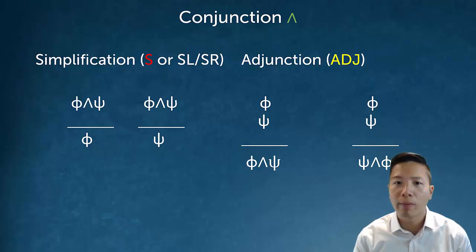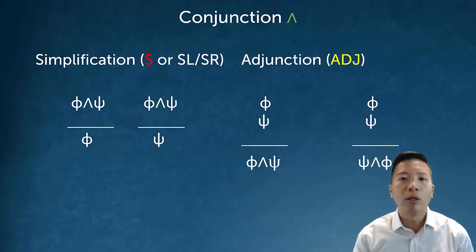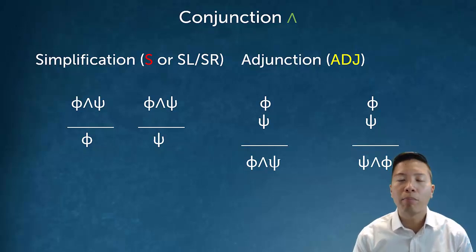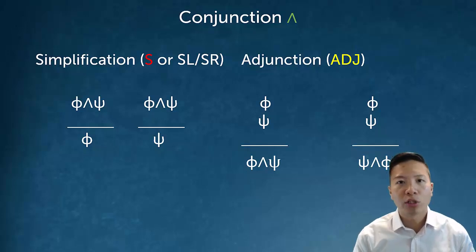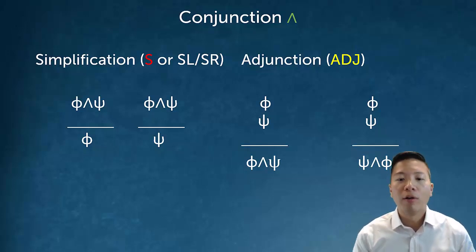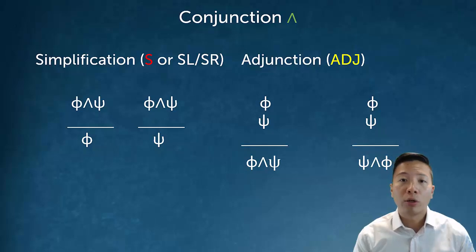Adjunction (ADJ) is the introduction rule for and. That means I can build up a conjunction sentence from smaller parts. So if I know phi and I also know psi, it stands to reason that I can conclude phi and psi. Of course, I can also conclude psi and phi.